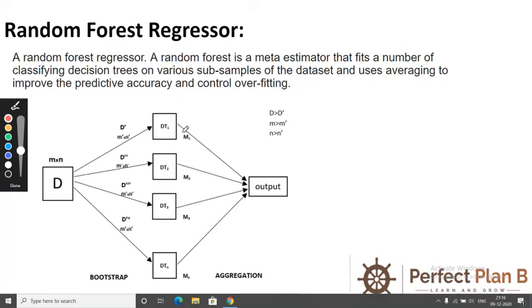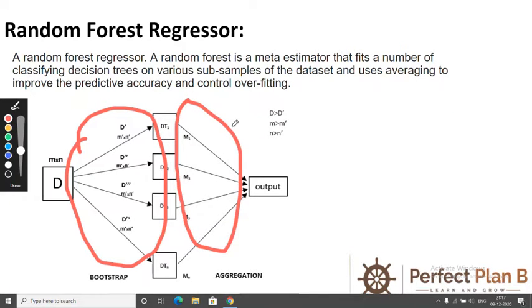And then we are getting the output of these decision trees and we are passing it to a voting classifier. This voting classifier or aggregator will then give me an output based on these outputs. We will get a value that will be the average of these values, or in case of a classifier, it will just give me the class labels that occur more frequently. So this is the part where the bootstrapping happens and this is the part where the aggregation happens. That is why it is called bootstrap aggregator.